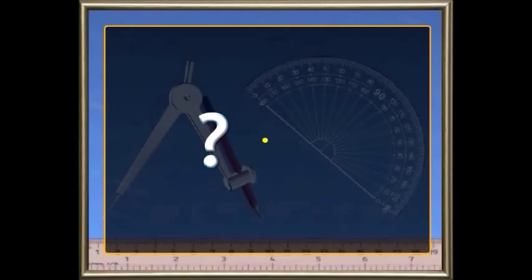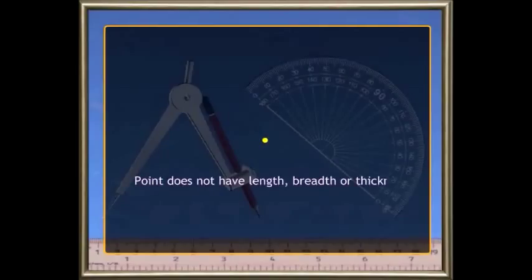Hey, can you see anything here? This is a dot, right? In Geometry, a dot is called a point. And usually, this point is identified with a number or letter such as 1 or A. Point does not have length, breadth or thickness.